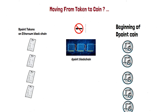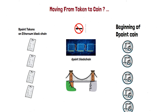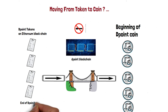Once I've successfully developed the DPoint Blockchain and DPoint Coin, I create a bridge on top of the DPoint Blockchain. Using this bridge, I can exchange or encash the old DPoint Token for the new DPoint Coin, and slowly destroy the token supply. The token usage gradually decreases until all tokens are fully converted to coins, and only the coins remain in circulation.